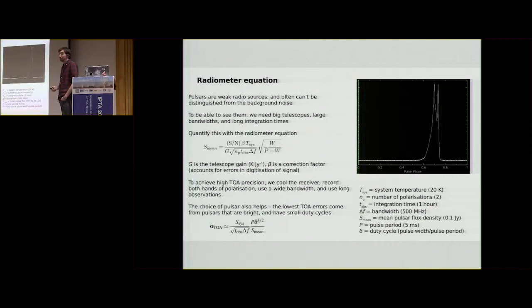So going back to actually observing pulsars, they're very weak radio sources. We normally can't see individual pulses against the background noise. So to be able to see them, we need big telescopes. We need to observe with large bandwidths. And we need to take long integration times to gather up enough signal to actually discern the pulsar from the background noise. And we can quantify this with the radiometer equation.